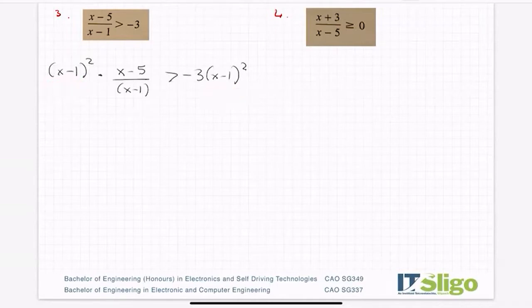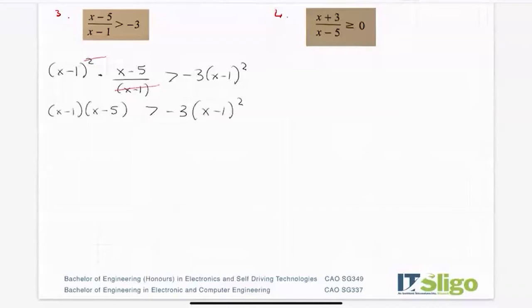This x minus 1 on the bottom cancels with one of those x minus 1's on the top, so that I end up with x minus 1 by x minus 5, being greater than minus 3 times x minus 1 squared.